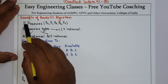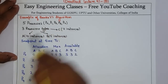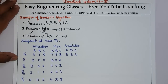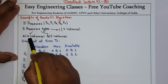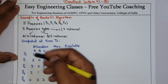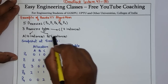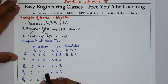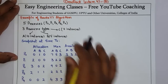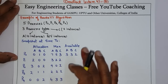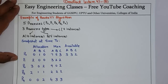We have 5 processes P0 to P4 and 3 different types of resources A, B, and C. Resource A has 10 instances, B has 5, and C has 7. At time T0, we take a system snapshot and the question asks us to check whether this system is in a safe state or not.